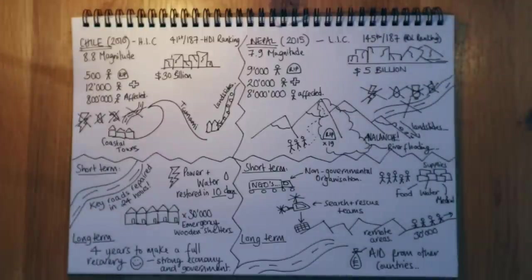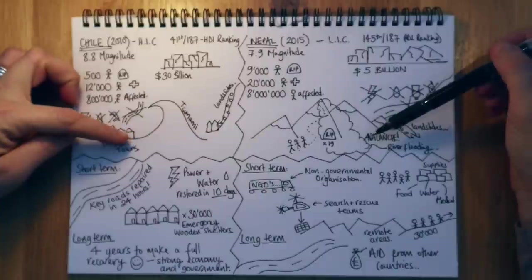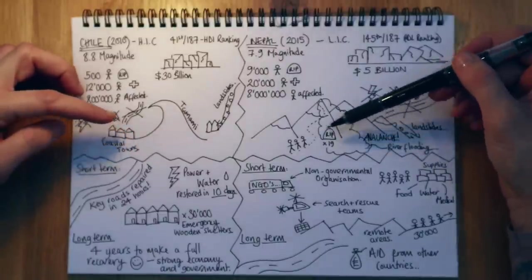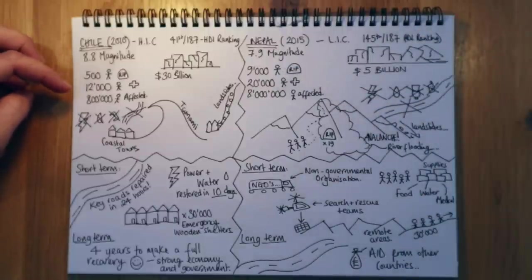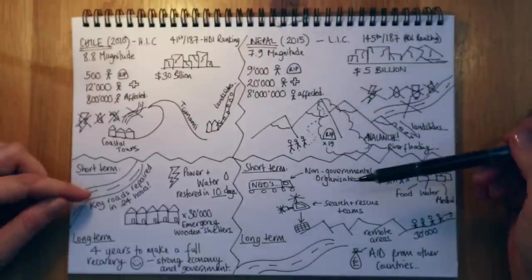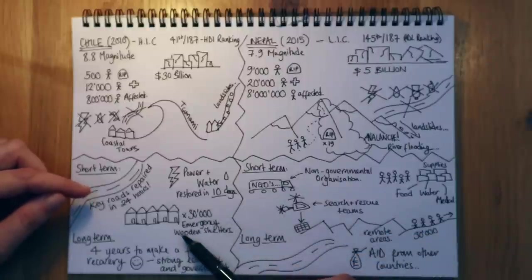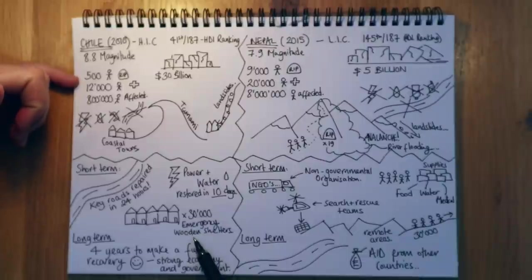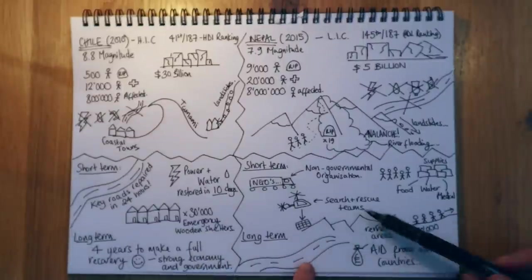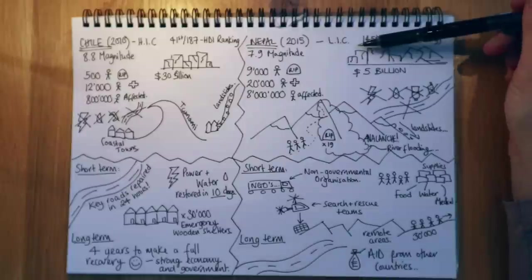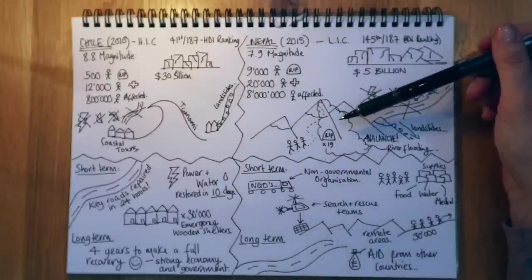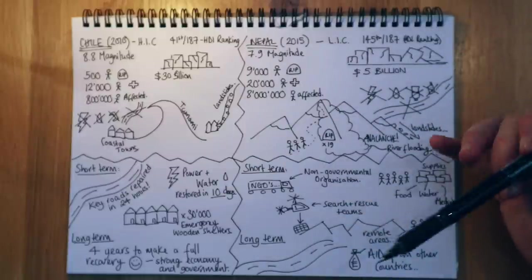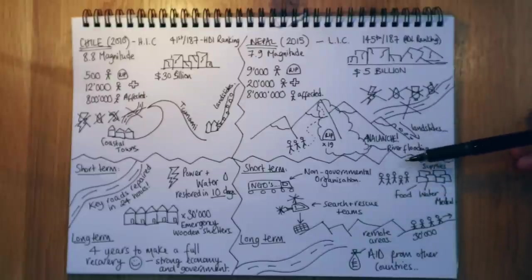So what we need to remember is that both earthquakes had primary and secondary effects and that they had devastating effects on the lives of people and their activities. But Chile was more prepared, more experienced, more wealthy and able to give that really rapid response and really effective response, which meant that their death toll was lower. Whereas if we look at Nepal, because of their being a low income country and having less money, they were sort of hindered by poverty. They were reliant on aid and support from overseas and their years to make a full recovery are still ongoing.